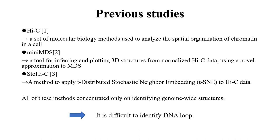Next, previous studies. The Hi-C method is the most popular way to understand the structure of chromosomes that cannot be determined from the genome sequence alone. There are methods to analyze Hi-C data using machine learning, such as MDS — for example, Mini-MDS and Orca Hi-C. Both are good methods, but it is difficult to find DNA loops because they try to reproduce the entire structure, so the accuracy of fine DNA loops is not good.